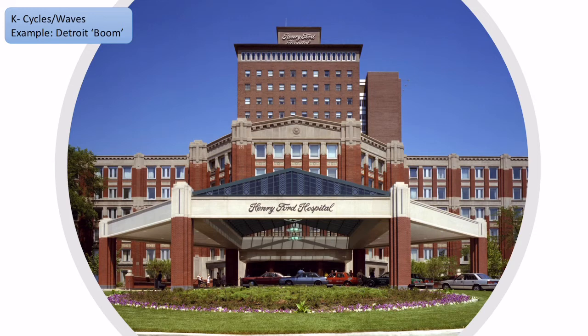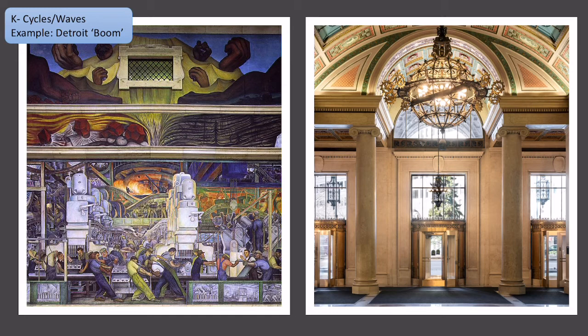This obviously led to changes for the place. Here is the Henry Ford Hospital — because it was such a wealthy place, they could build large infrastructure projects like huge hospitals. Similarly, here's an example of some of the buildings in Detroit: an incredible mural, which was expensive to build, made by Diego Rivera, who is the partner of Frida Kahlo. And the place on the right is Cadillac Place — these industrial buildings show that it was an area of wealth and growth because lots of money was put into the built environment during this boom period.